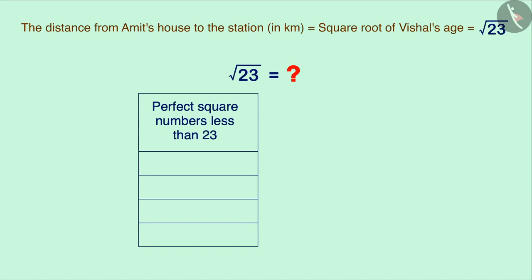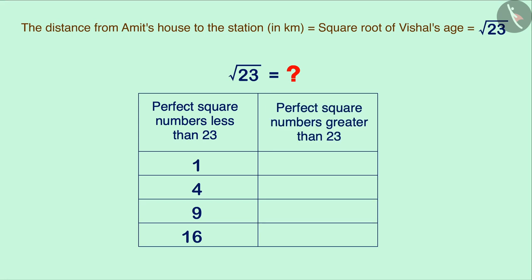Let us now find the square root of 23. First, think of perfect square numbers smaller than 23, like 1, 4, 9, 16. Then, think of perfect square numbers which are larger than 23, like 25, 36, 49.